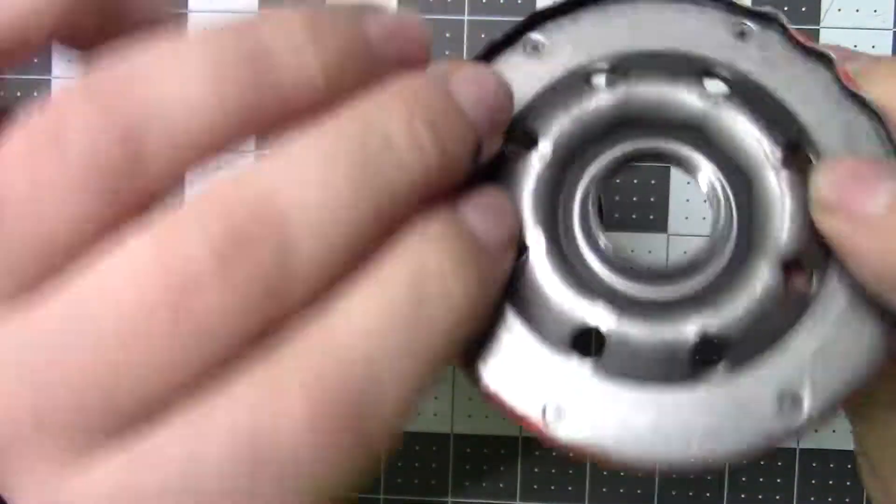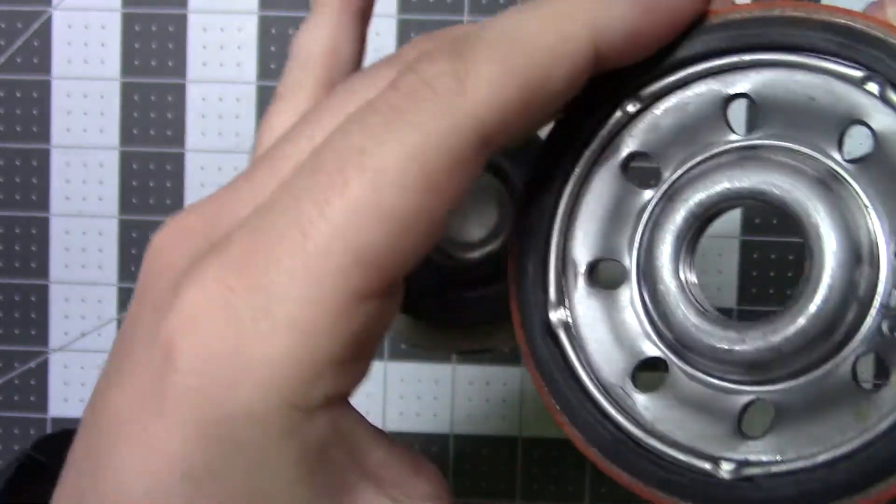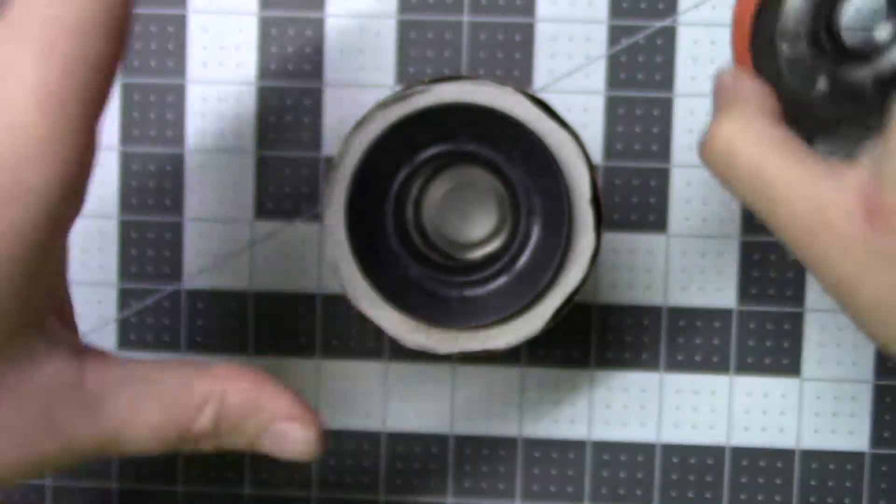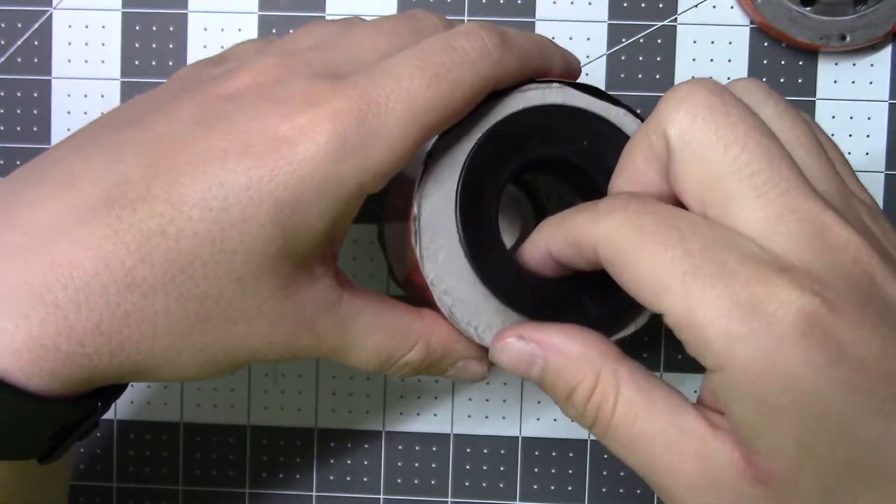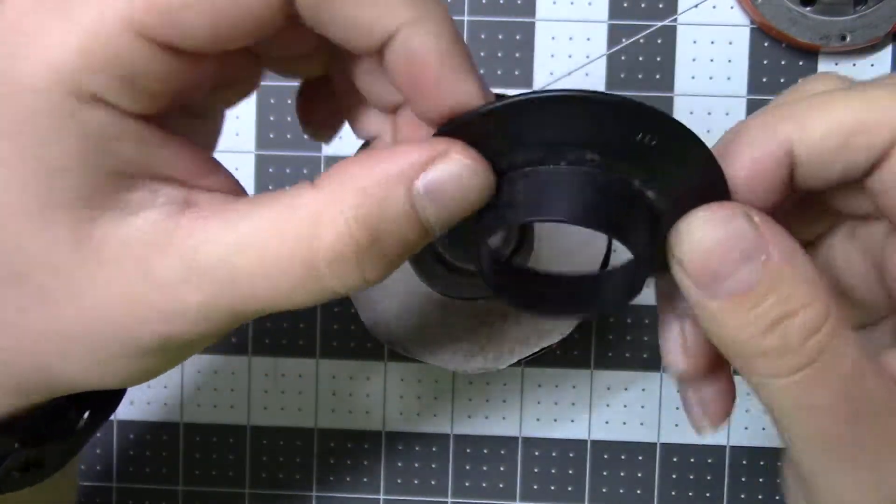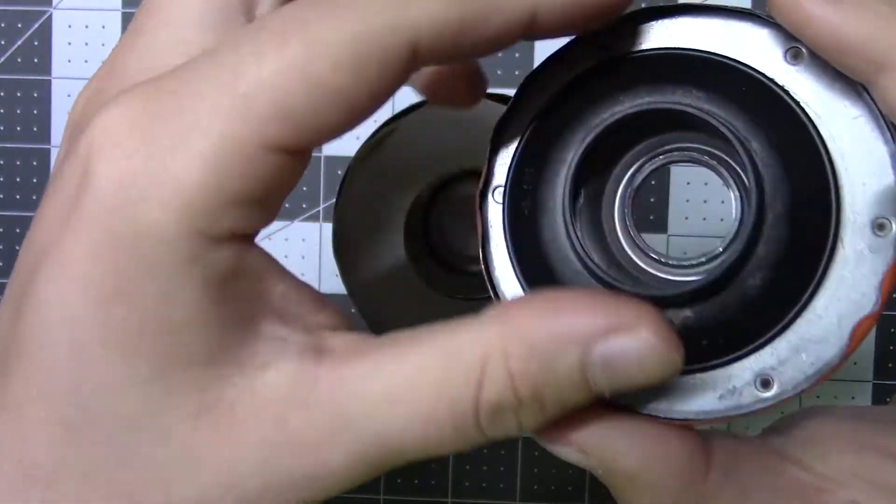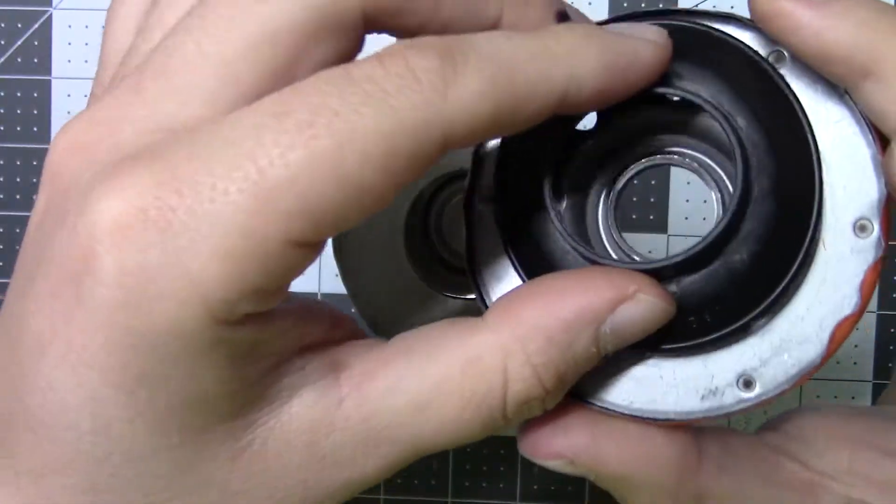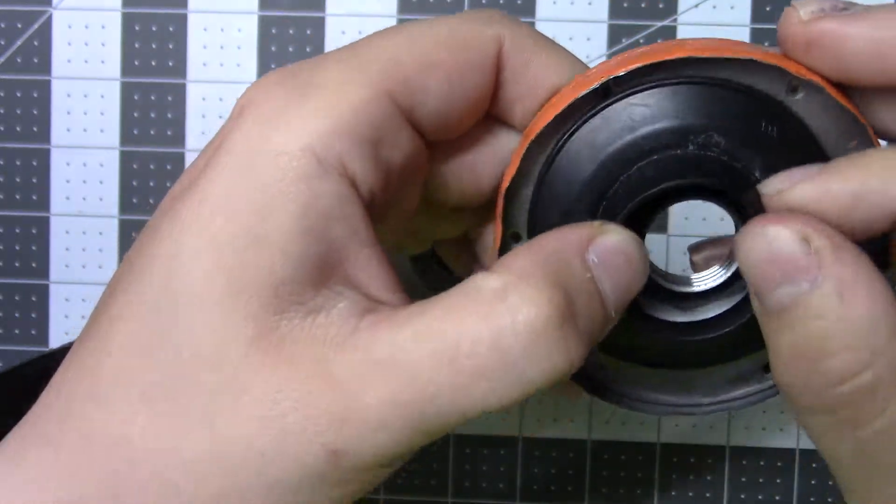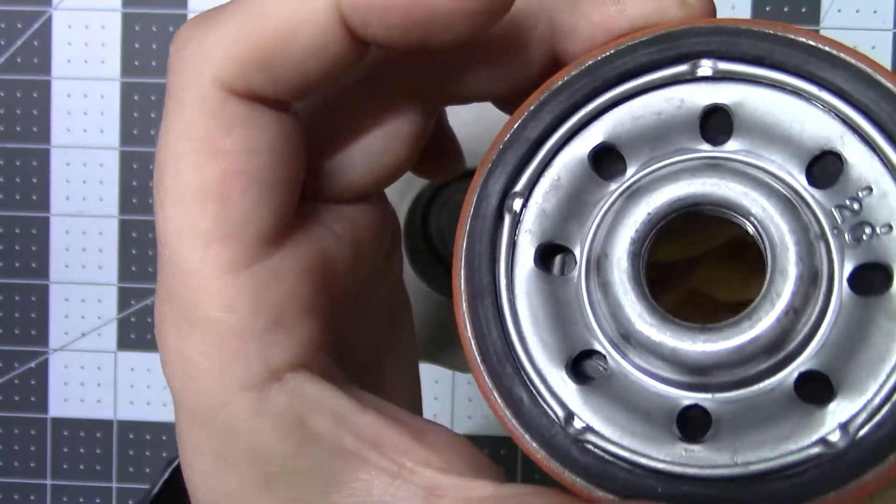You have your threaded piece that screws on the engine, and I believe this is your anti-drain back valve. I believe that pushes on here and seals to prevent the oil from draining out of the filter and out of your engine.